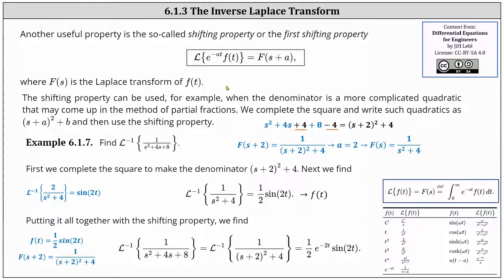Another useful property is the so-called first shifting property, which states the Laplace transform of e^(−at)·f(t) equals F(s + a), where F(s) is the Laplace transform of f(t). The shifting property can be used, for example, when the denominator is a more complicated quadratic that may arise in partial fractions. We complete the square and write such quadratics as (s + a)² + b, then use the shifting property.